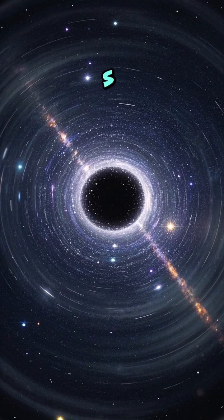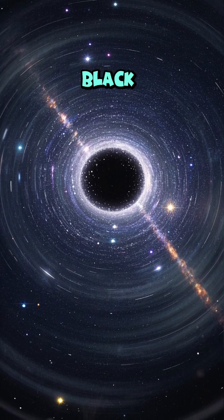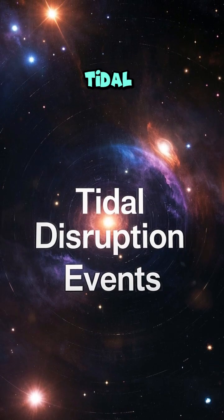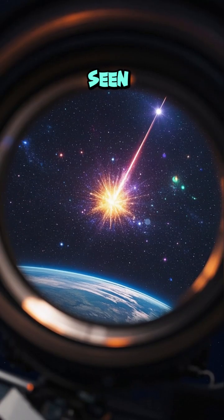Some of the star's material gets flung back into space and the rest spirals into the black hole and vanishes. These epic cosmic scenes are called tidal disruption events or TDEs for short, and we've actually seen them from Earth.